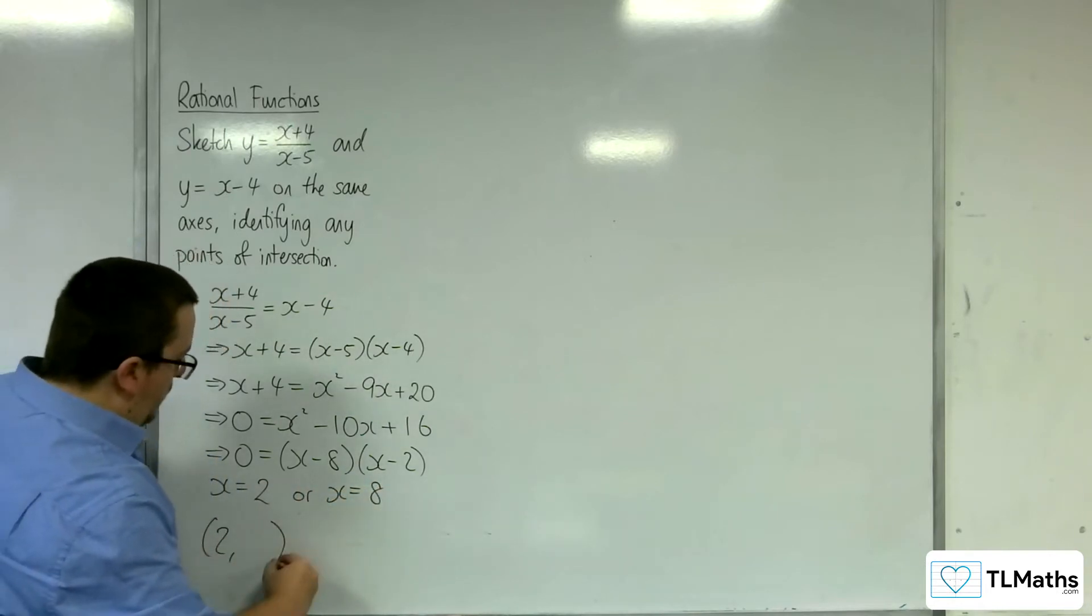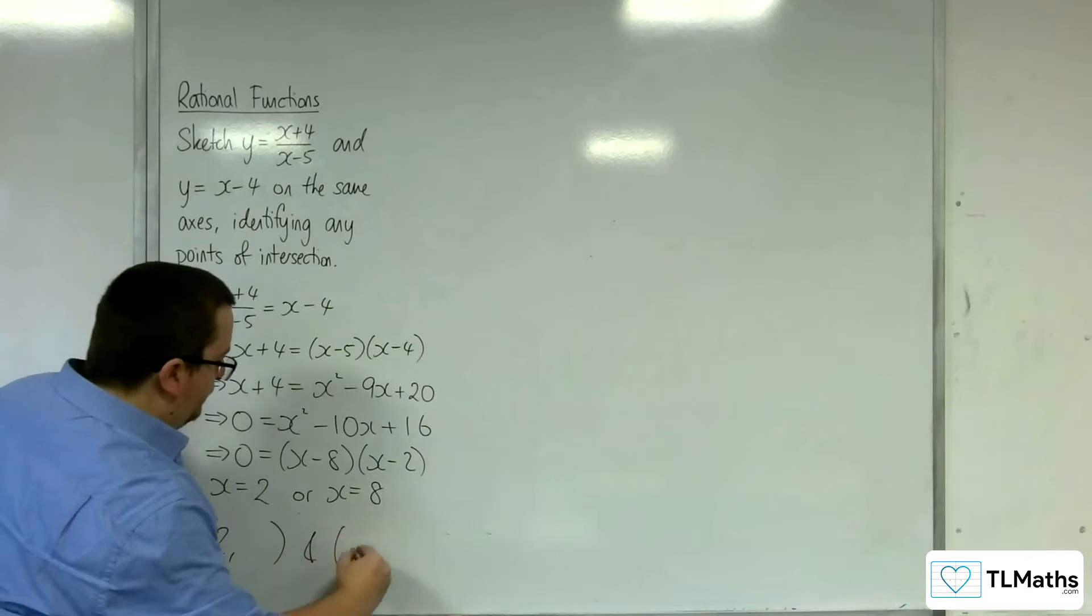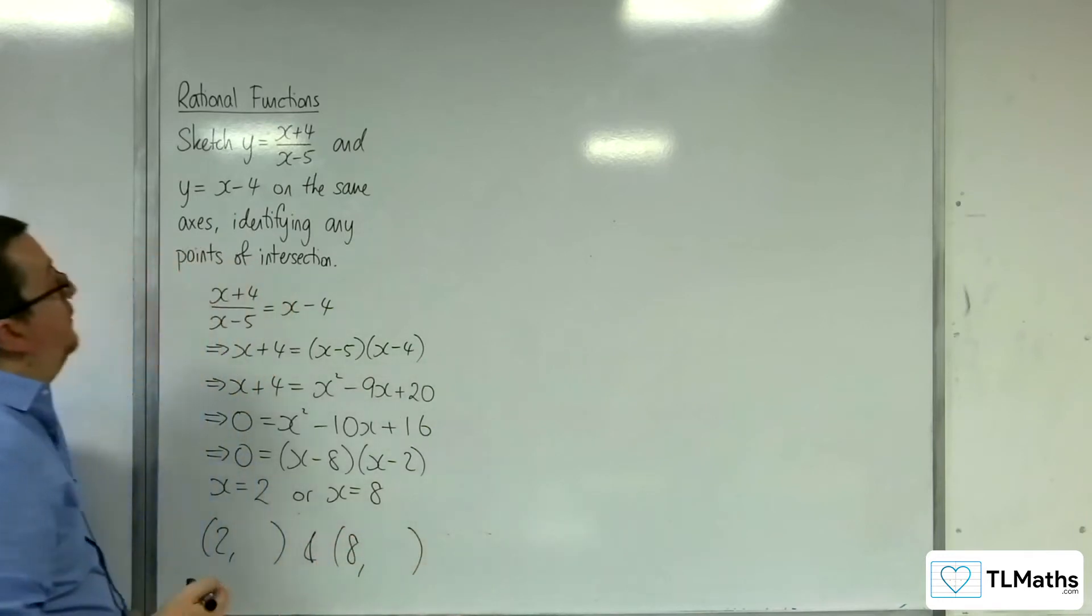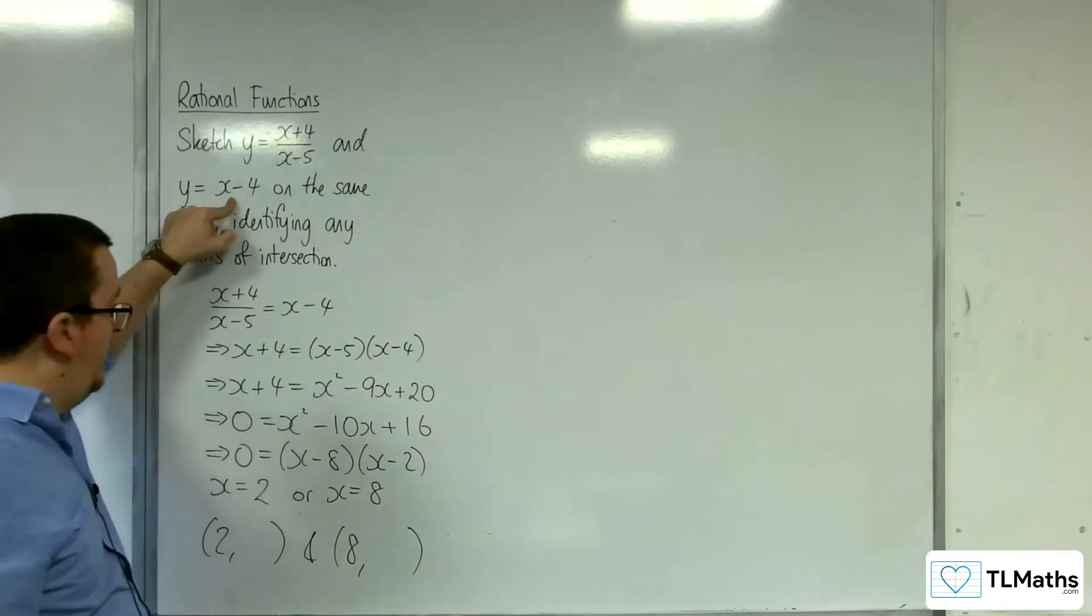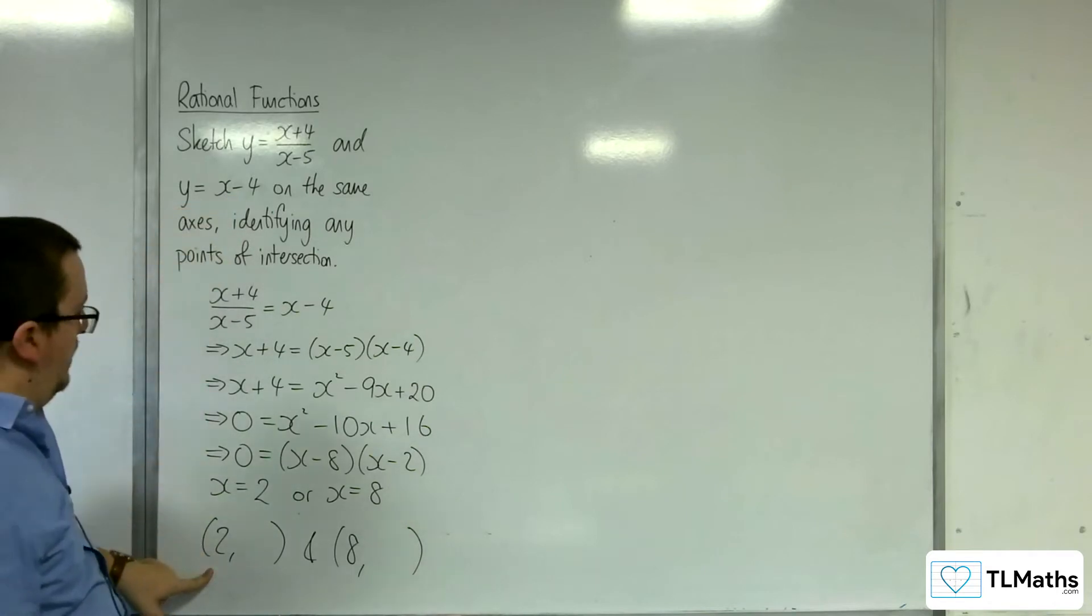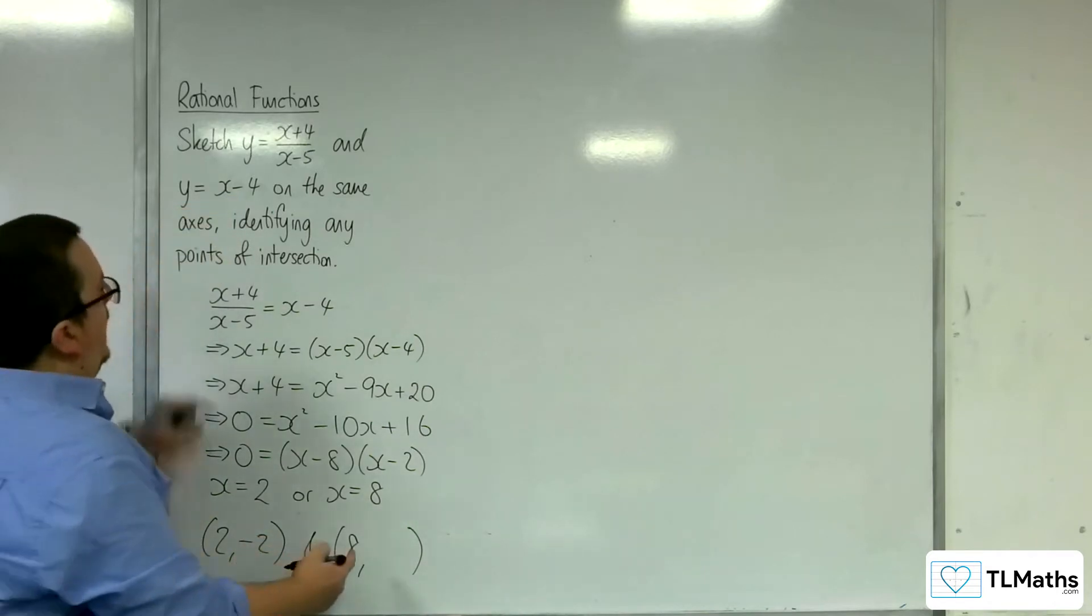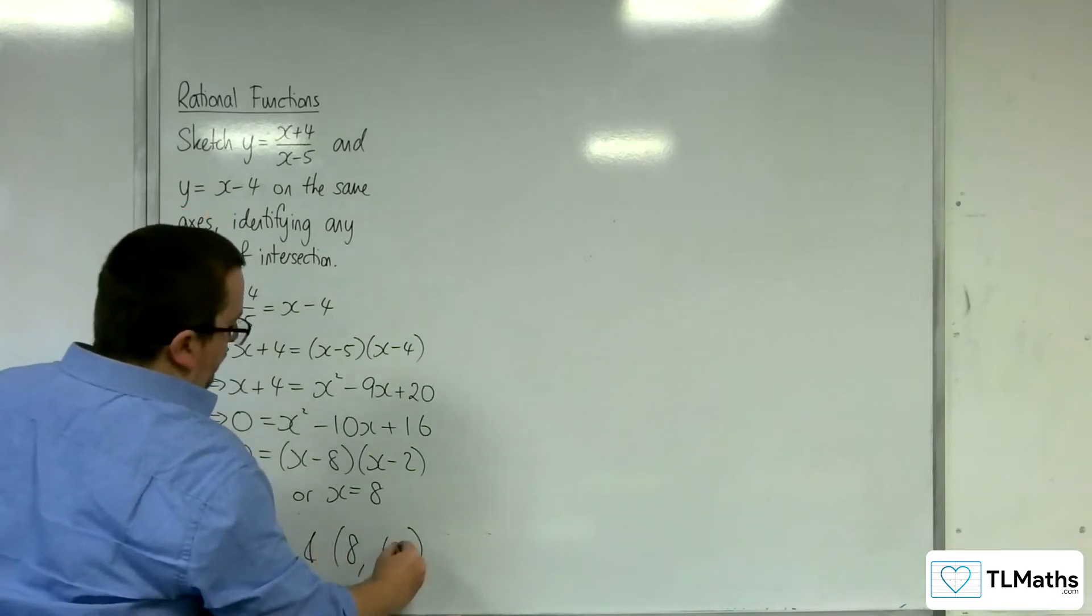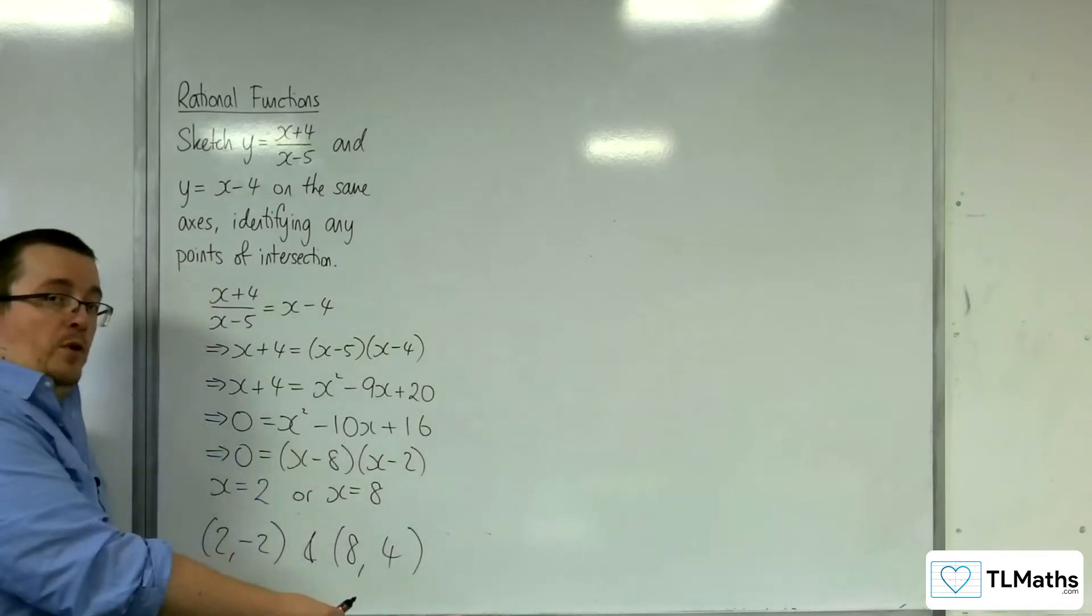So I just need to find the y values now. Substitute them into y equals x minus 4, that would be easiest. So 2 take away 4 is minus 2, and 8 take away 4 is 4. So these are my two points of intersection.